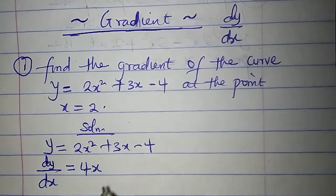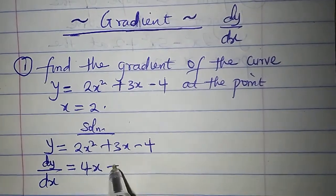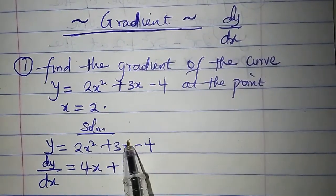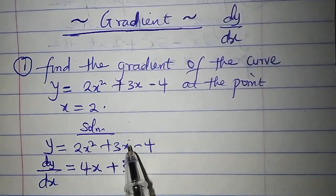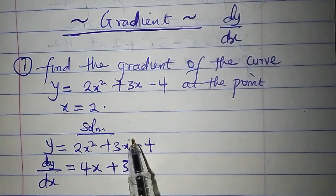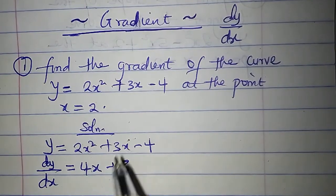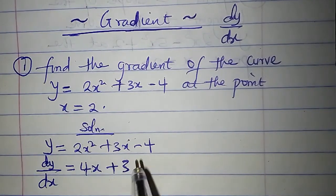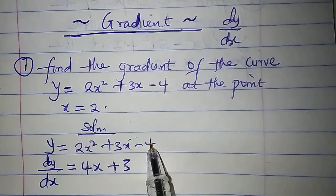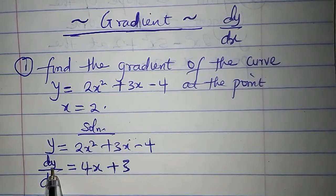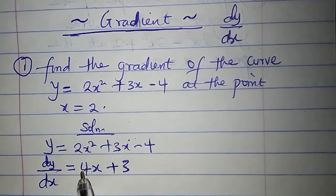Differentiate 3x to get 3. The power of x here is 1; 1 times 3 is 3, and 1 minus 1 is 0, so x to the power 0 is 1. Differentiate minus 4 to get 0. So the gradient function of this curve is dy/dx = 4x + 3.